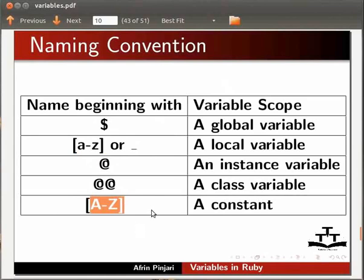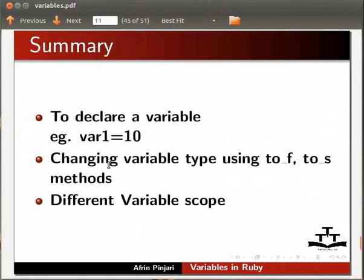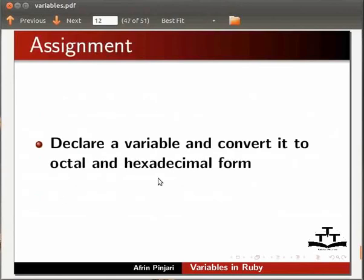This brings us to the end of this spoken tutorial. Let us summarize. In this tutorial we have learnt to declare a variable, for example var1 equal to 10, changing a variable type using to_f and to_s method, and different variable scope. As an assignment, declare a variable and convert it to octal and hexadecimal form.